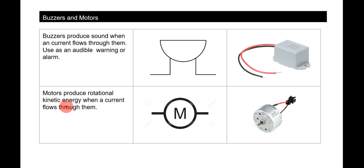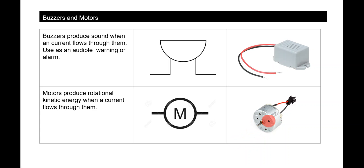Motors produce rotational kinetic energy when a current flows through them. Electrical energy from moving electrons is converted into kinetic energy — circular motion. Motors can be used to propel something through water or make something fly through the air with a propeller attached. It's important that you know each of these symbols, what they do, and are able to draw a simple circuit.